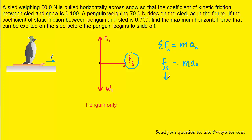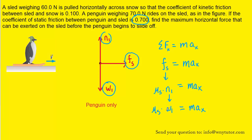The static frictional force can be substituted with the expression mu_s — the coefficient of static friction — times the normal force. The coefficient of static friction between the penguin and sled is 0.7. The normal force equals the weight of the penguin because there is no acceleration in the y direction, so those forces must be balanced. We can replace the normal force with the penguin's weight mg. Dividing both sides by mass, the acceleration in the x direction equals mu_s times g.